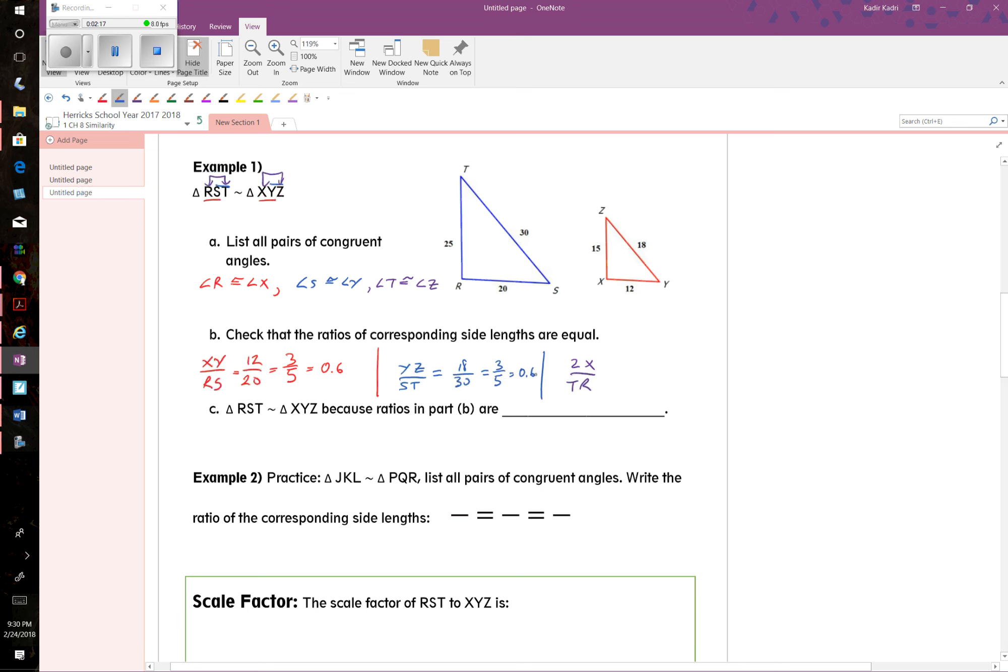The last side, we have TR, which is equal to—its length—excuse me, TR here is 25. And ZX, which is 15. And when we're doing this, this reduces to three-fifths as well, or six-tenths.